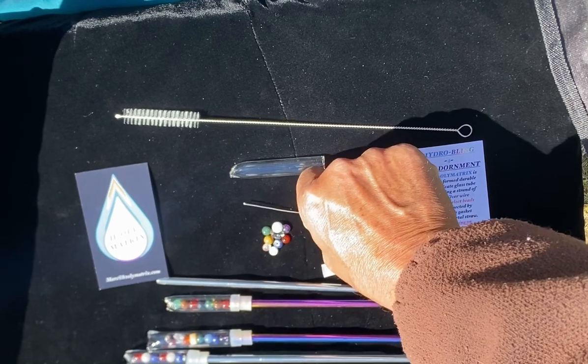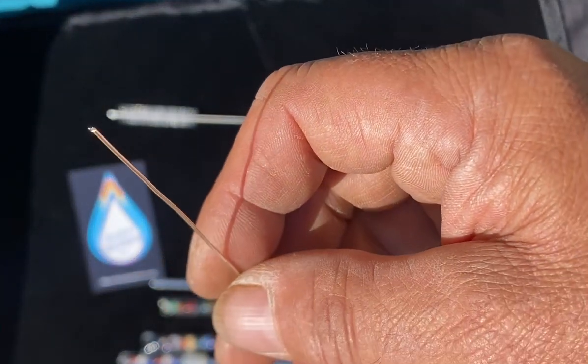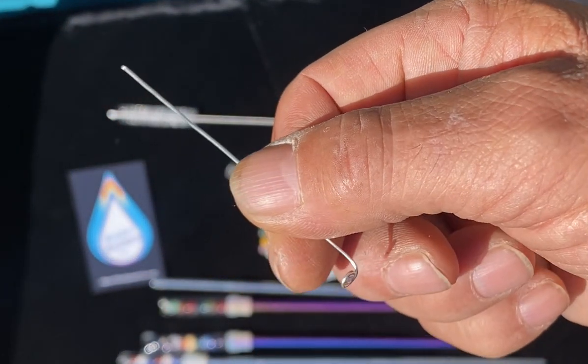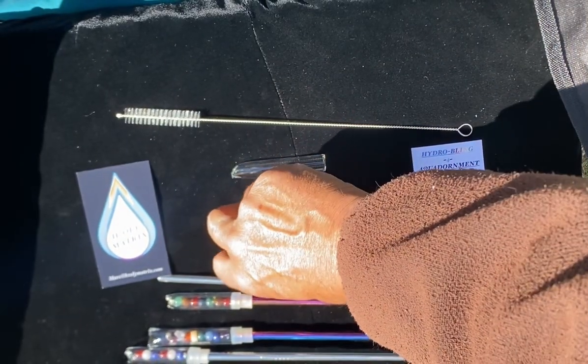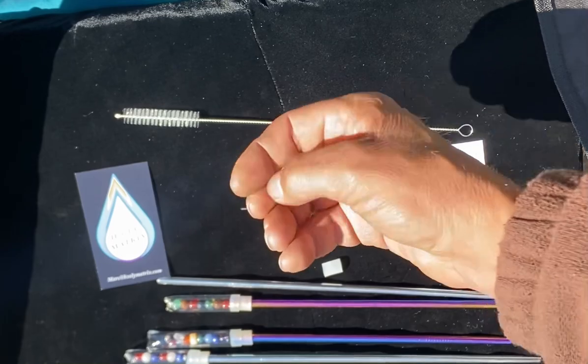Then I take a strand of 999 pure silver wire and add colorful beads, gemstones, and crystals to the wire in order to put it into this tube of glass.